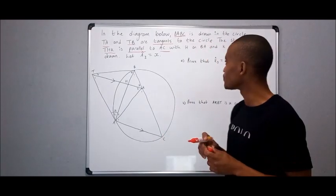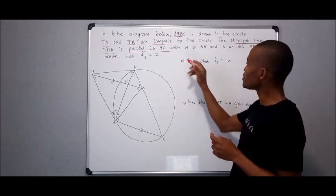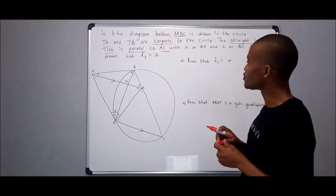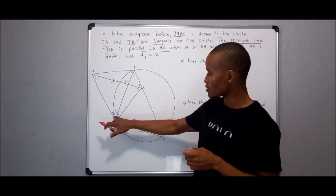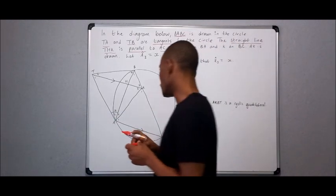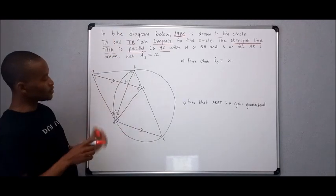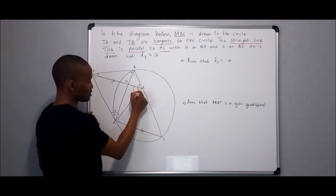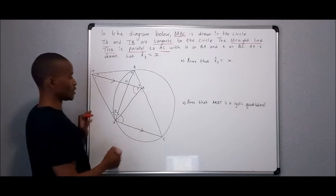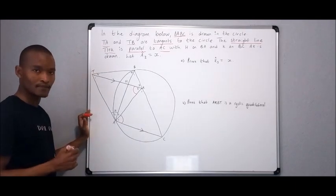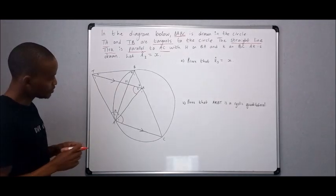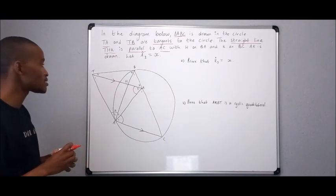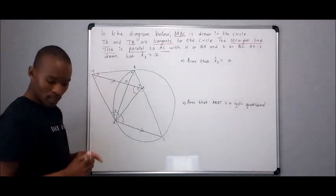At least one of those three or a combination can be present in the diagram. So it is parallel to AC with H on BA and K on BC. AK is drawn and let angle A3 is equal to x, there it is. So what are we going to do? From the words move into the diagram and we investigate what's going on. Parallel lines, we know that this K2 will be equal to angle A1, alternate angles because of parallel lines.